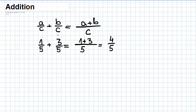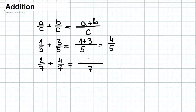Let's try another example: two-sevenths plus four-sevenths. We rewrite seven as the denominator, then write two plus four, which gives us six-sevenths.